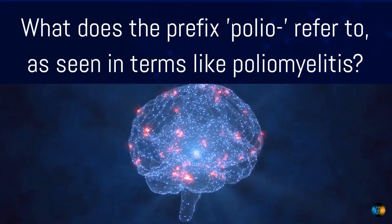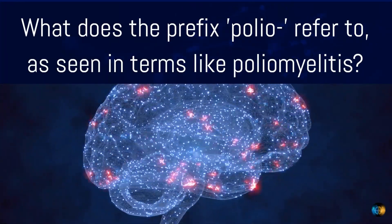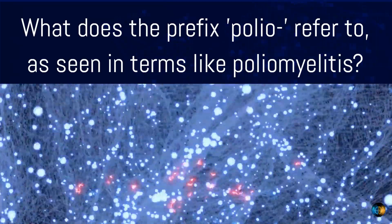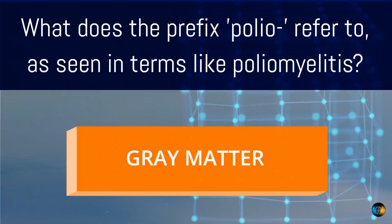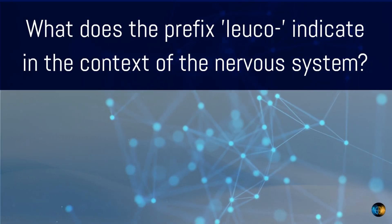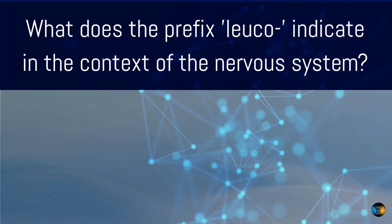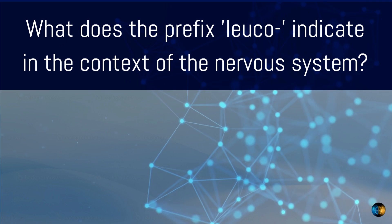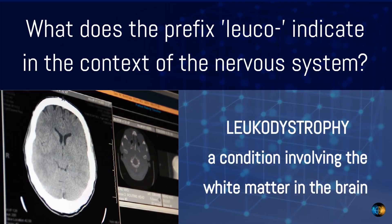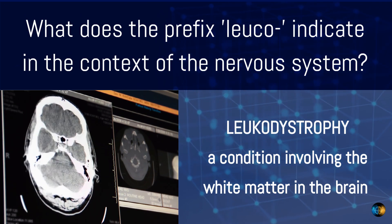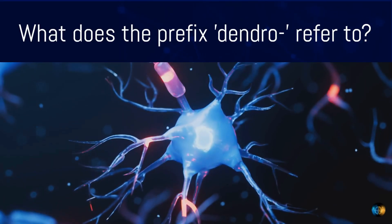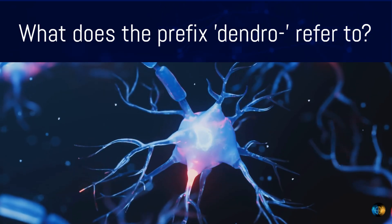What does the prefix 'polio' refer to, as seen in terms like poliomyelitis? Gray matter. What does the prefix 'leuco' indicate in the context of the nervous system? White matter. For example, leukodystrophy is a condition involving the white matter in the brain.